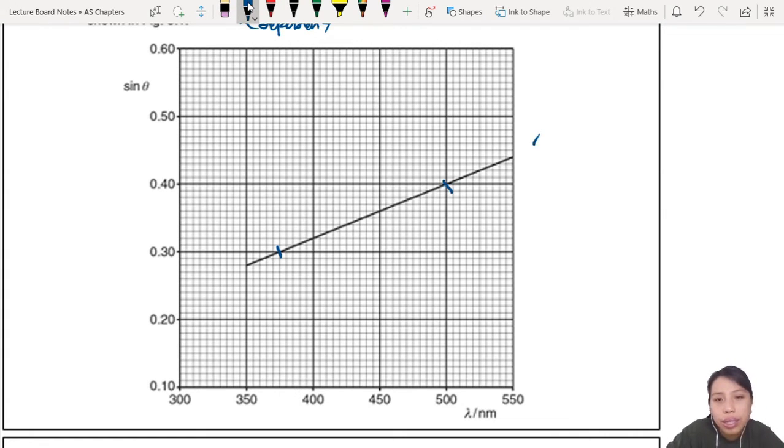So here you need to do - what is this point here? 500 nanometer and 0.4, no unit - ah, sin θ is just a ratio. This one will be 300 - wow, my eyes - 375 nanometer and 0.30. So these are your points they are going to use to find your gradient.